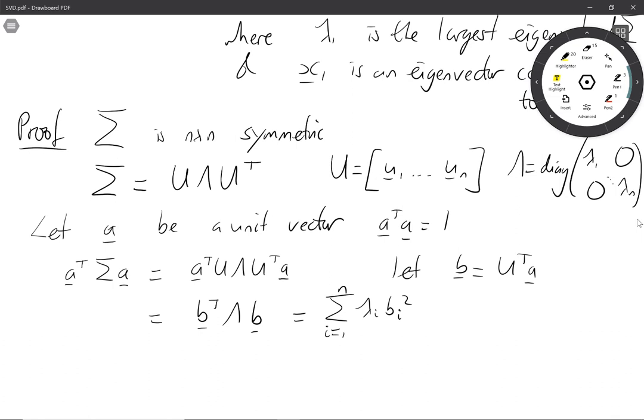Now we chose a to be a unit vector but is b a unit vector? Well let's just check. Let's think about b transposed b, that is a transposed U U transposed a. Well U transposed U is the identity so this is just a transposed a which is 1, so b is a unit vector.